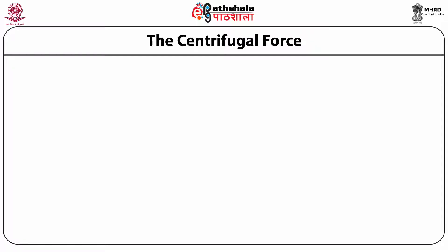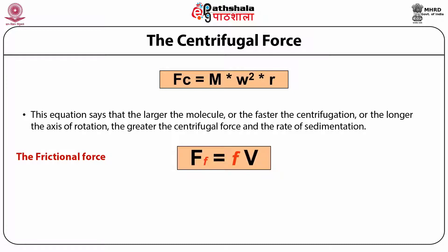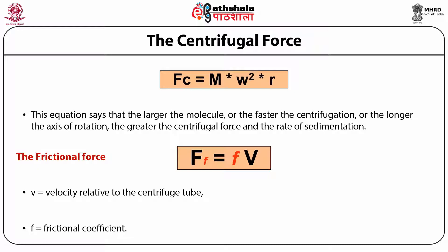There are two kinds of force acting on a molecule. The centrifugal force equals M × ω² × R, meaning it is directly proportional to the mass of the molecule, the square of the angular velocity, and the radius. Apart from centrifugal force, frictional forces also act on the molecule governed by the medium inside the tube. The frictional force F is proportional to f × V, where V is the velocity relative to the centrifuge tube and f is the frictional coefficient — a property of the molecule.